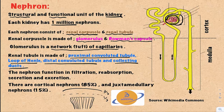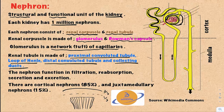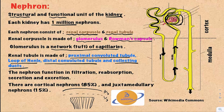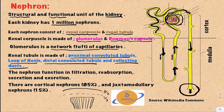The proximal convoluted tubule is most proximal to the renal corpuscle, and it continues as the loop of Henle, which has three parts: the thin descending limb, the thin ascending limb, and the thick ascending limb. After that comes the distal convoluted tubule, and finally the collecting duct, which opens into one of the renal papillae and then into the calyceal system.